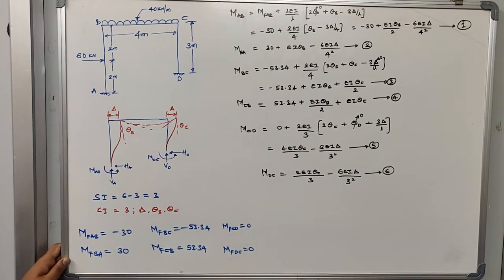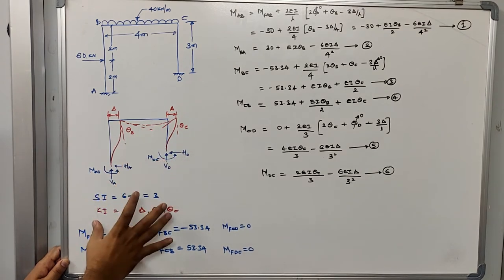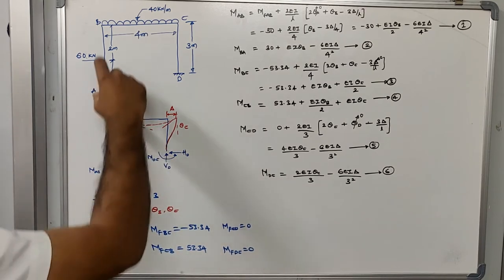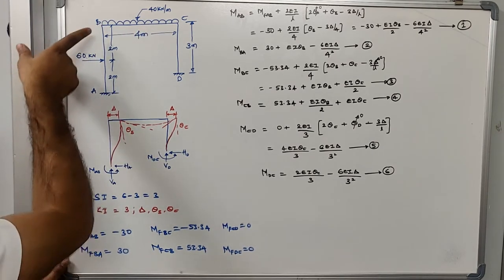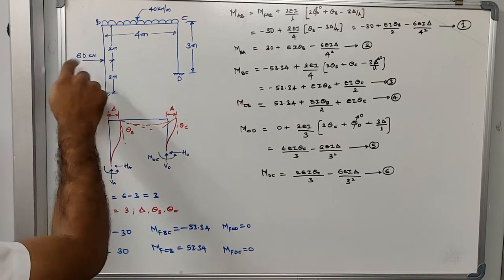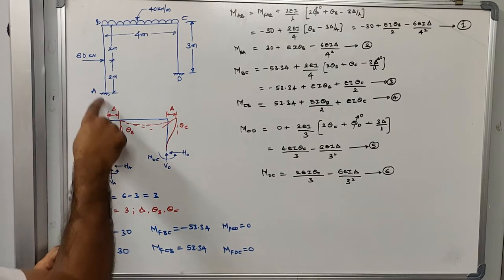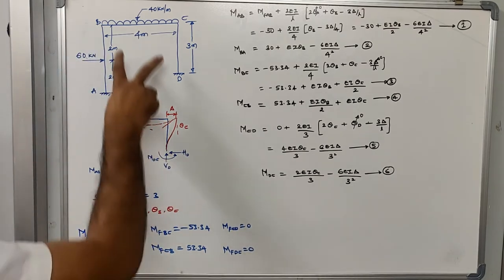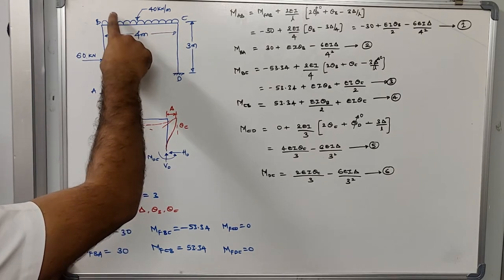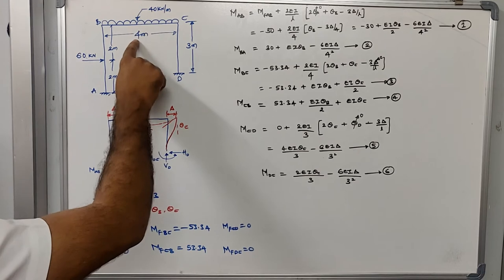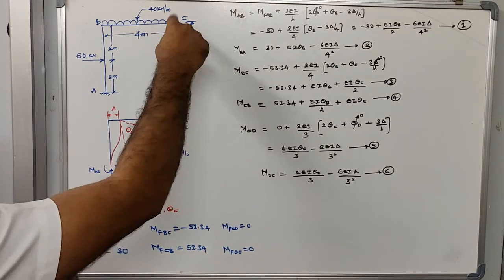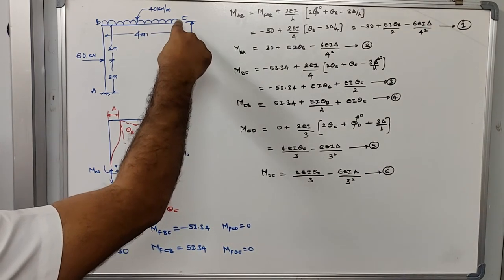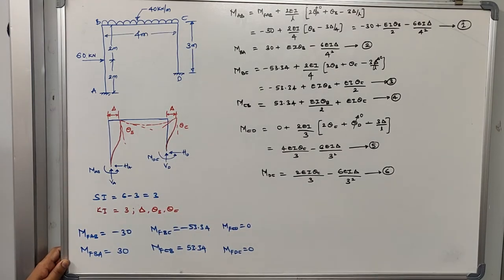Once static and kinematic indeterminacy are established, we determine the fixed end moments. Element AB is subjected to a concentrated load at the center: 60 × 4 / 8 gives fixed end moments MF_AB = −30 and MF_BA = +30. For member BC: w·L² / 12 = 40 × 4² / 12, giving MF_BC and MF_CB. Since there is no load on member CD, MF_CD = MF_DC = 0.